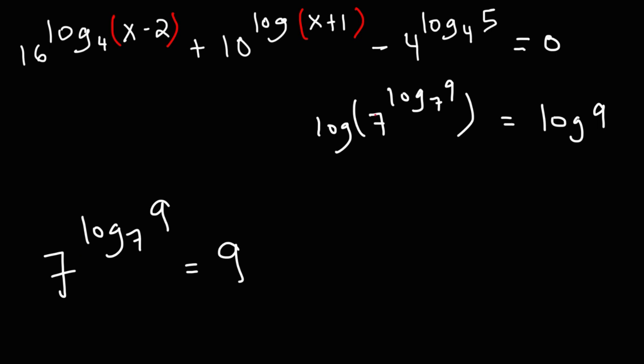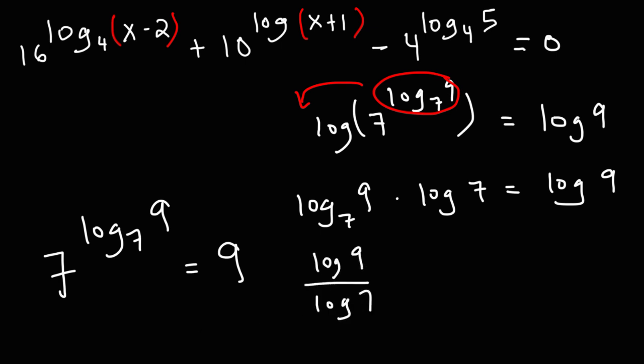If you take the log of both sides, you'll have the log of 7 raised to log base 7 of 9, and on this side, you'll have log 9. A property of logarithms allows you to take the exponent and move it to the front. So you're going to have log base 7 of 9 times log 7, and that's going to equal log 9. Next, you could use the change of base formula. Log base 7 of 9 is equal to log 9 over log 7. And when you multiply that by log 7, the log 7s will cancel. And so you could see that log 9 equals log 9. So this expression works.